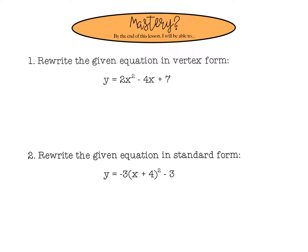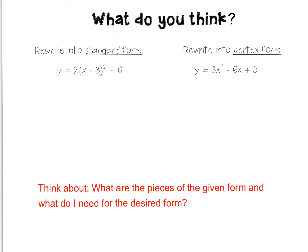By the end of this lesson, you should be able to take a quadratic function in standard form and convert it to vertex form, and vice versa — a quadratic function in vertex form and put it in standard form. So think about what are the pieces of the given form, and what do I need for the desired form? What do I have based off of the current form, and what am I going to need for that other form?